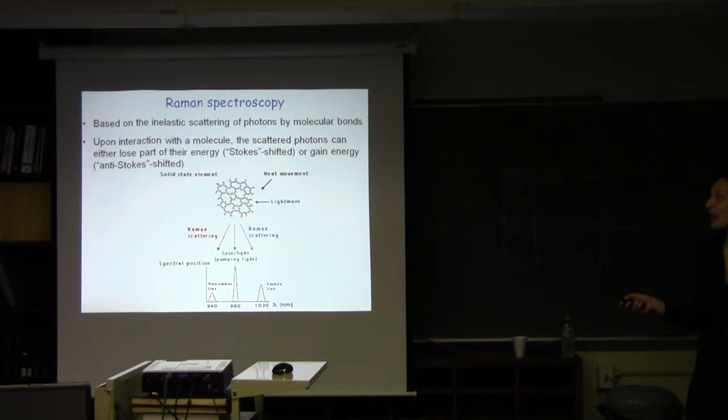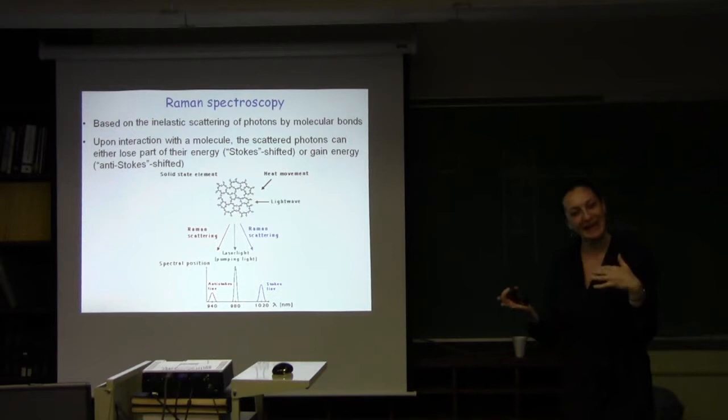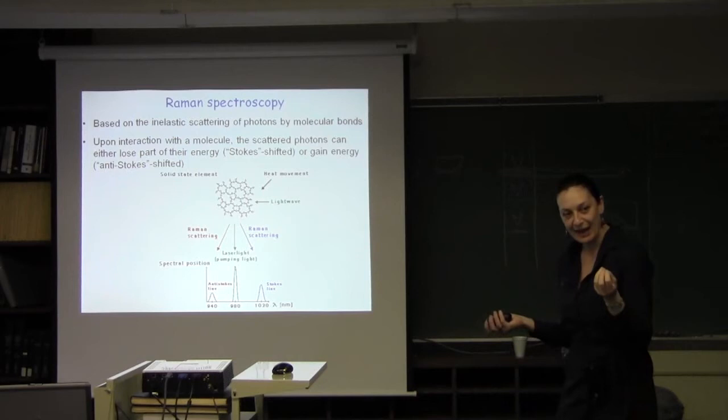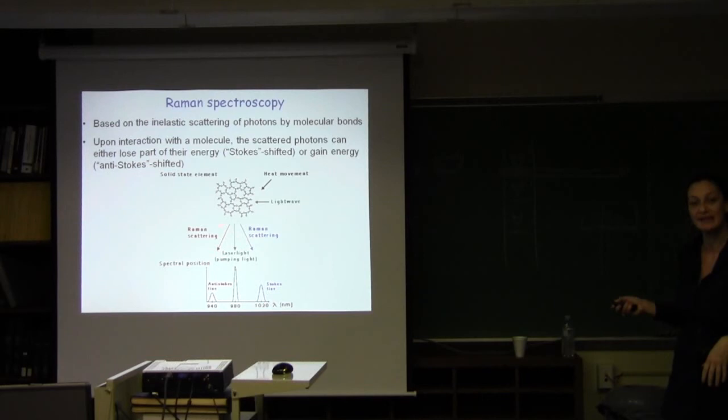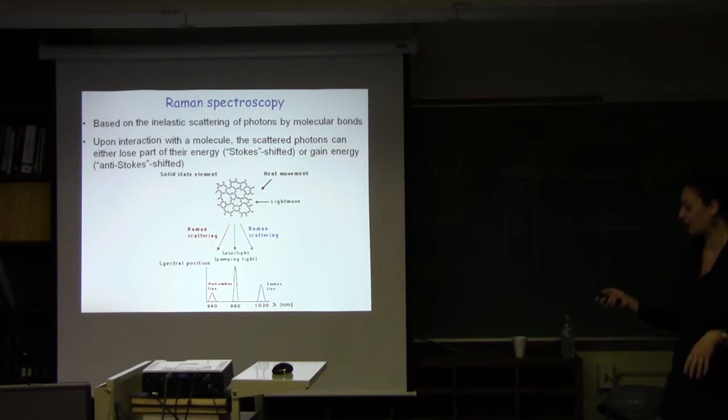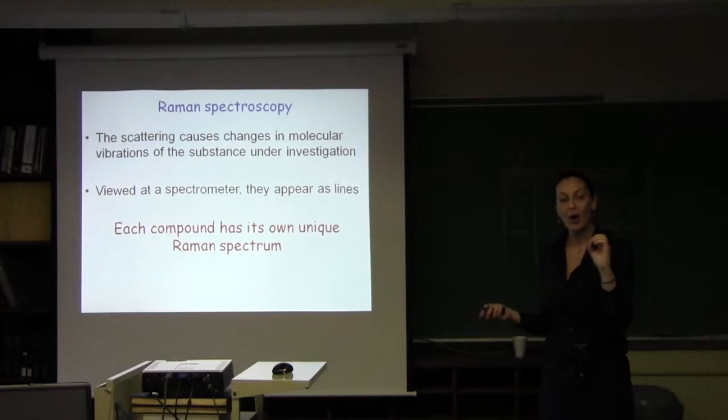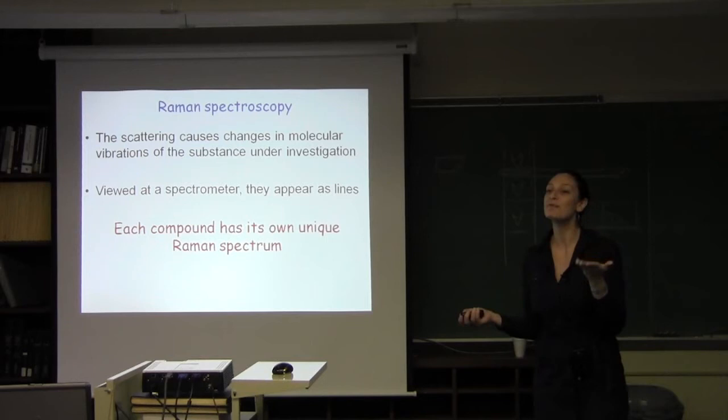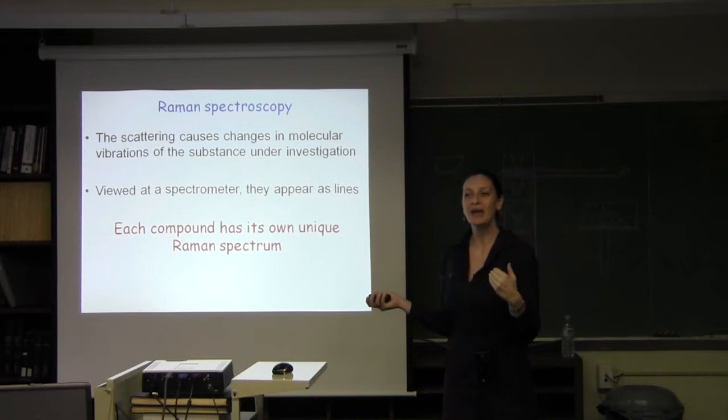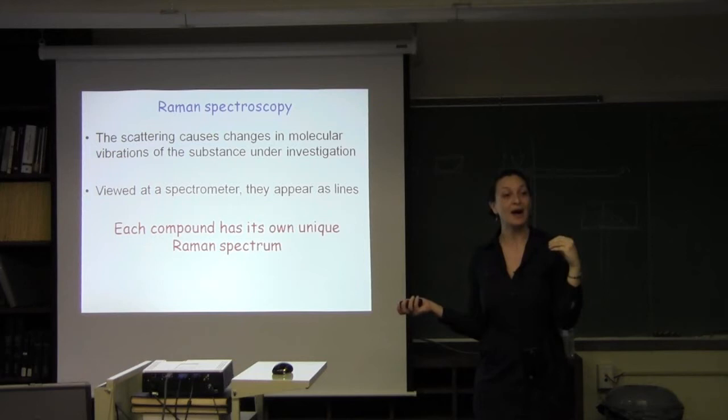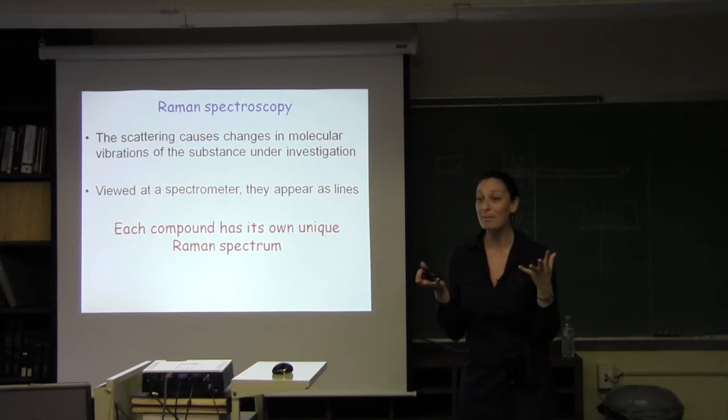Raman spectroscopy is based on the scattering of photons by molecular bonds. You have light that traverses your molecule, your compound, your target. Upon interaction, the photon is scattered and it can lose part of its energy or gain some energy. If you look at this loss and gain of energy with the spectrometer, they appear as lines. You have Raman scattering, which is Stokes-shifted when it loses energy, or anti-Stokes-shifted when it gains energy.